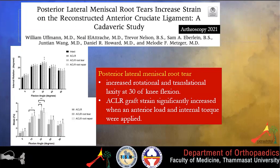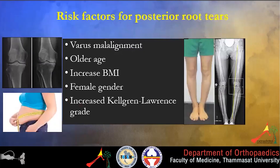A cadaveric study published in Arthroscopy 2021 showed increased rotational and translational laxity at 30 degrees of knee flexion if there is a posterior lateral root tear, and ACL graft strain also significantly increased when anterior load and internal torque were applied in this situation.